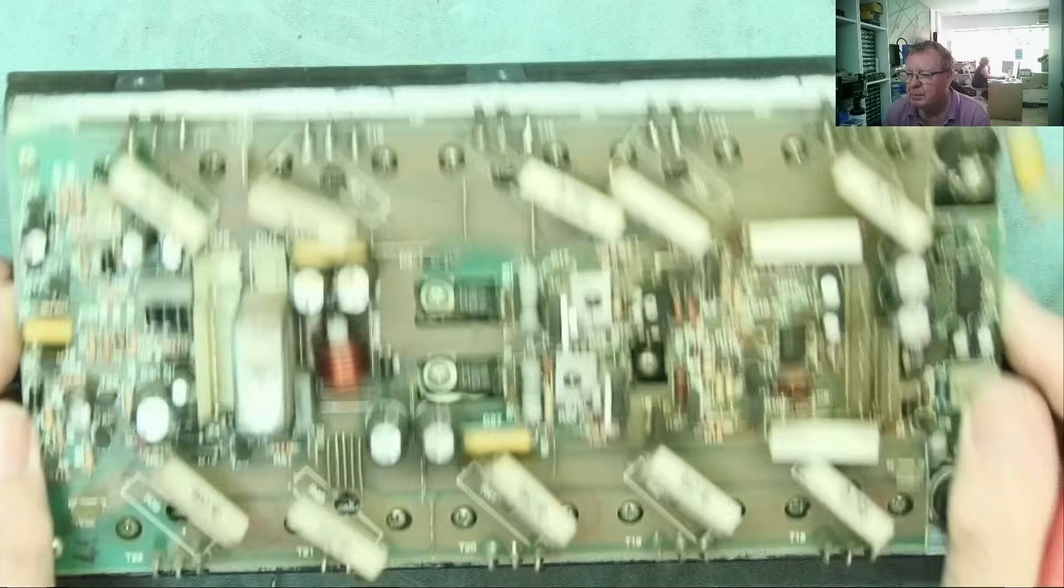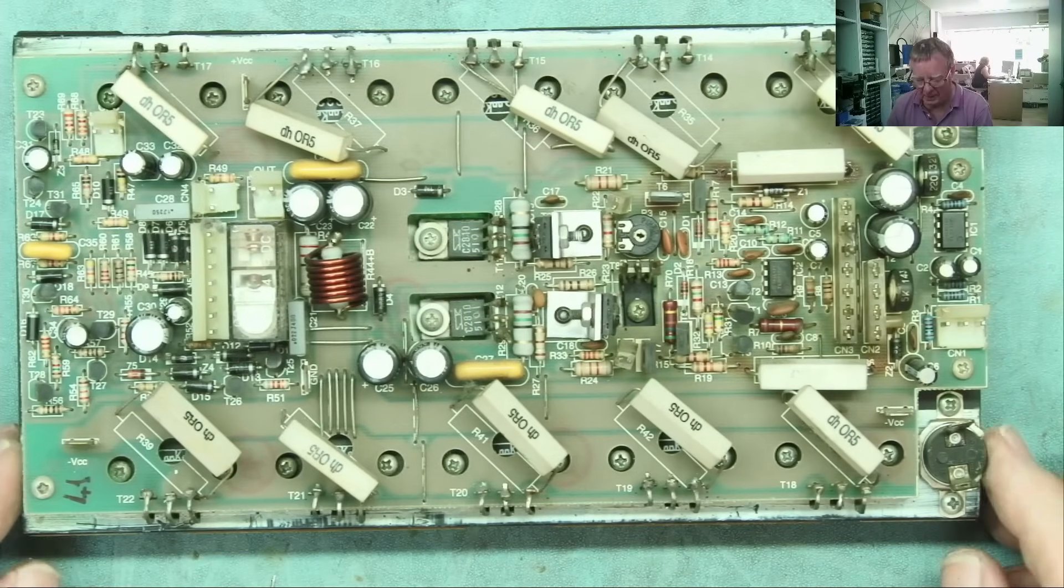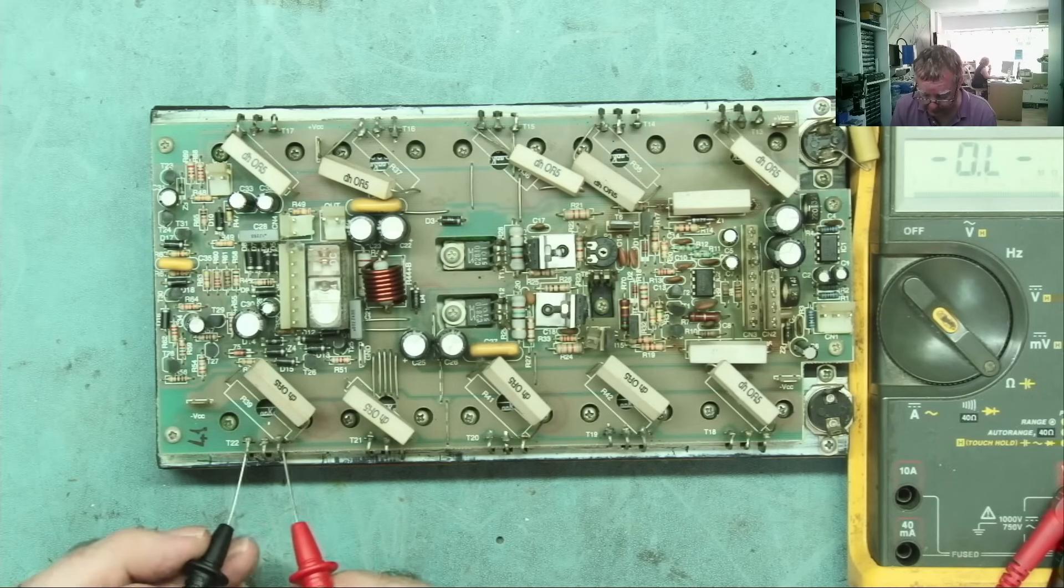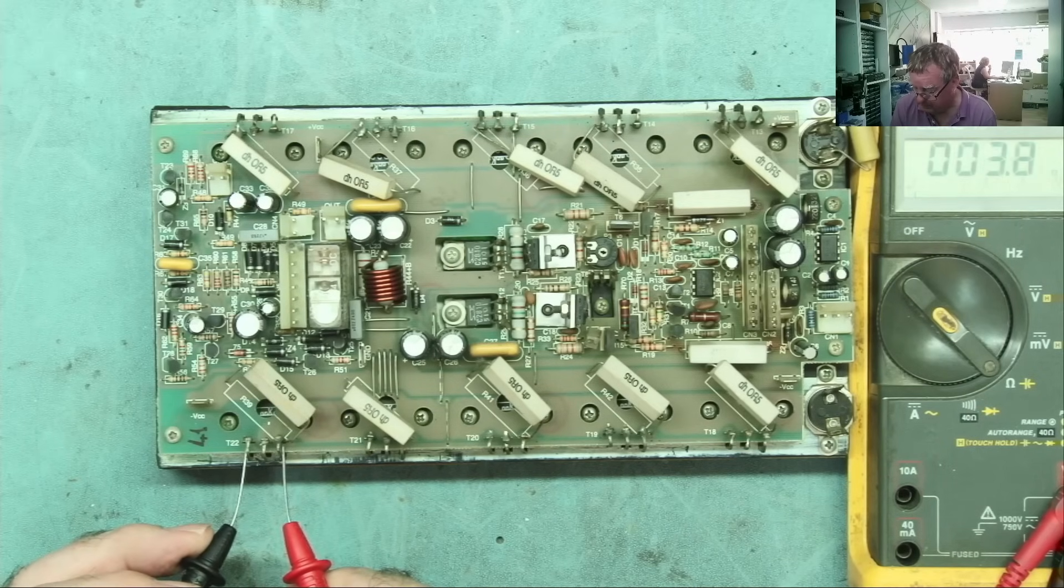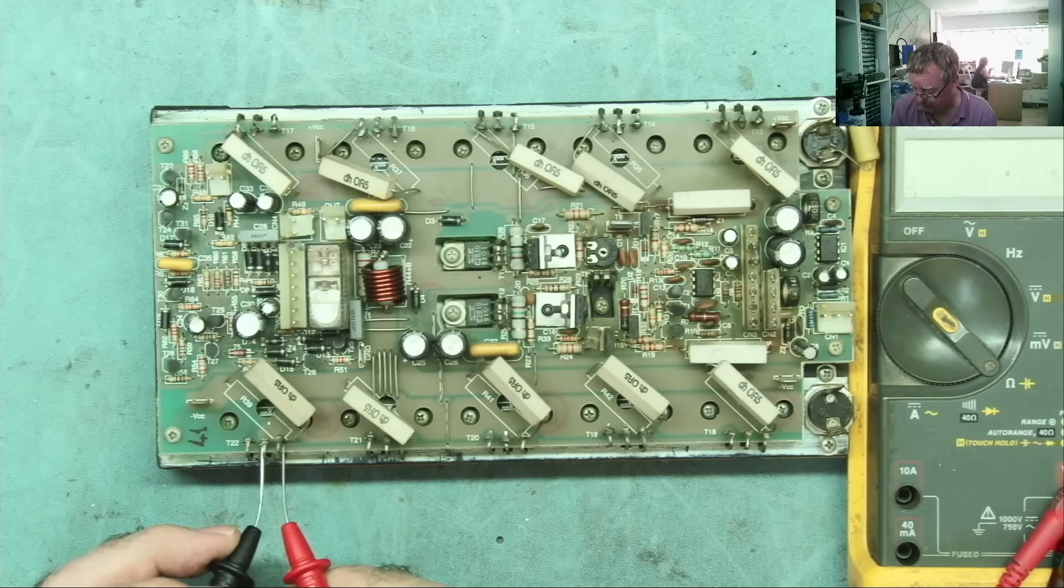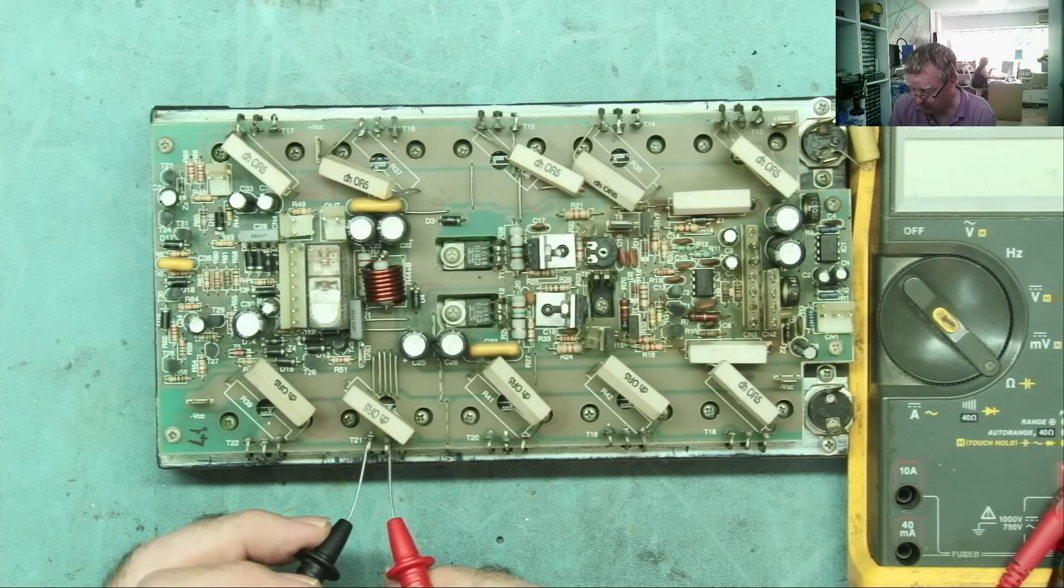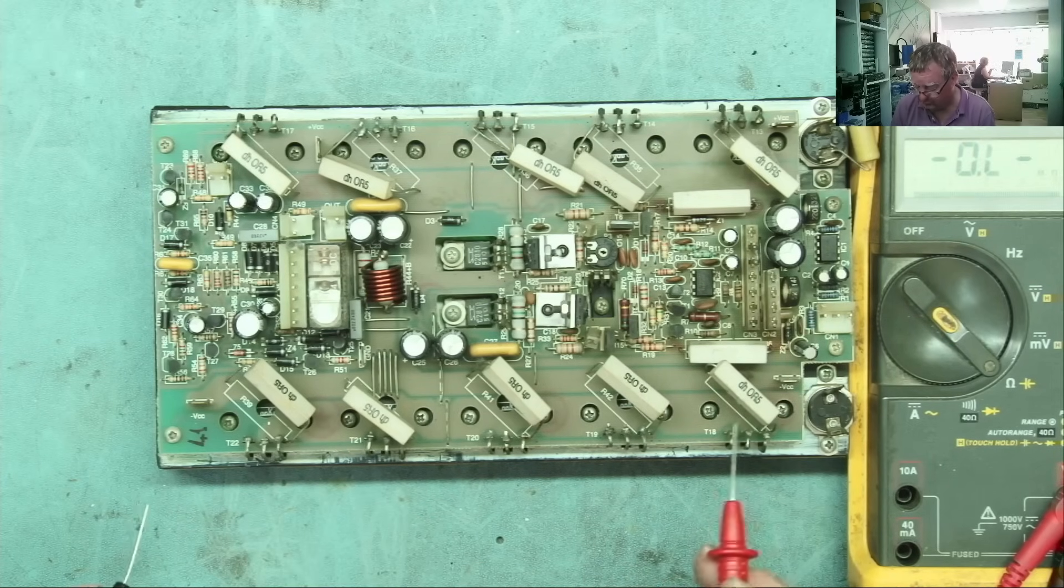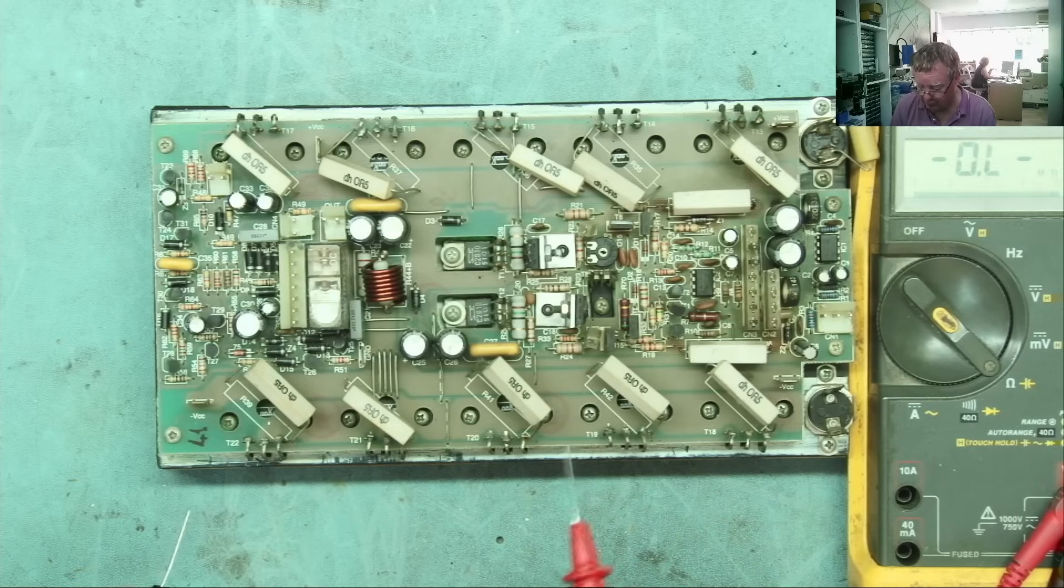So if we just measure across these - this would be base-emitter, it's a couple of ohms. Base-collector, collector-emitter - that just reads completely short because these are in parallel. They're all going to read the same anyway, regardless if only one is short or they're all short or something else is giving us the short reading.